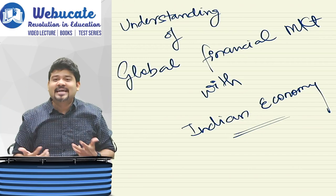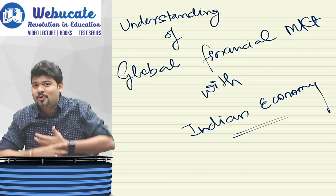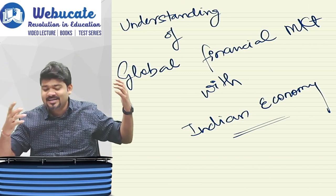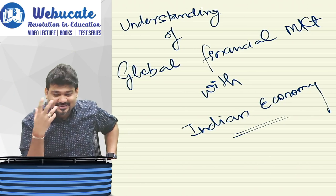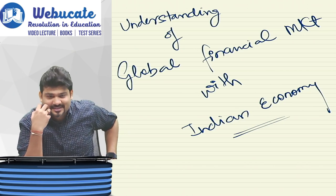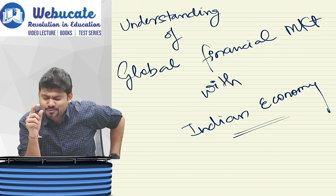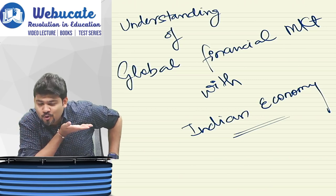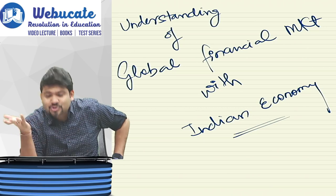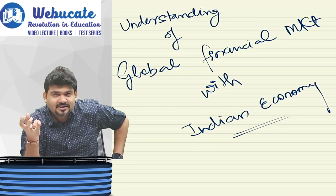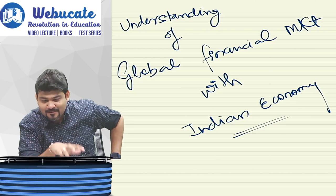The global financial market impacts all economies including India, the Asian countries, Japan, China, and the United States of America. It is said that whenever China sneezes, the whole world gets a cold. So if China is not feeling well, it will affect the whole world. Globally, the dollar is taken as a benchmark currency — we'll understand that when we do the forex section.